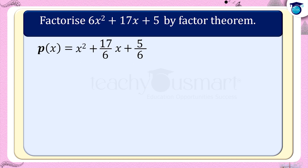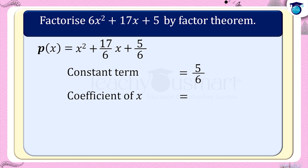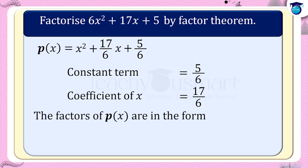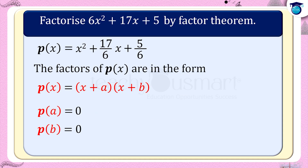Now in p(x) equals x squared plus 17/6 x plus 5/6, the constant term is 5/6 and the coefficient of x is 17/6. The factors of p(x) are in the form p(x) equals (x plus a) multiplied by (x plus b), which implies p(a) equals 0 and p(b) equals 0.